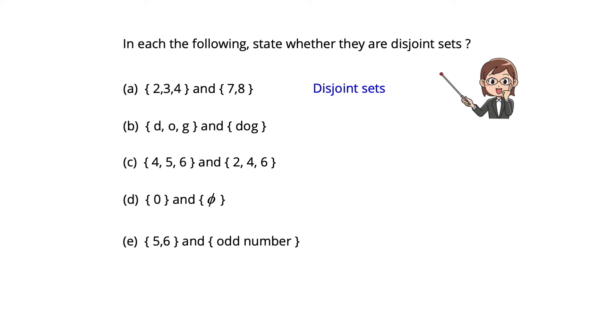B, they are disjoint sets. D, O, G represent alphabet and DOG is a word. They are totally different.